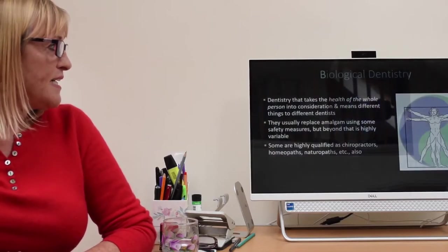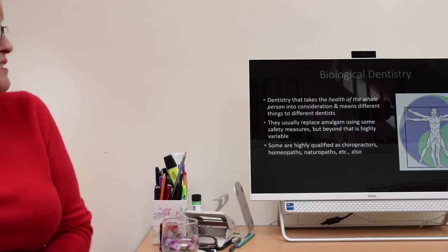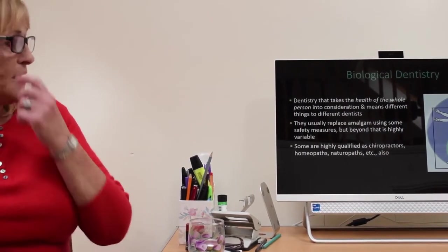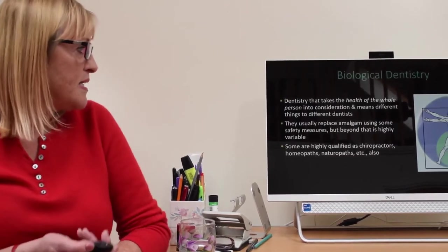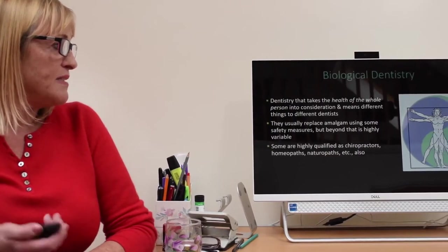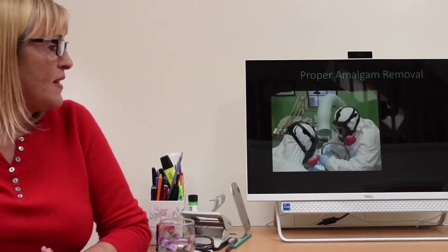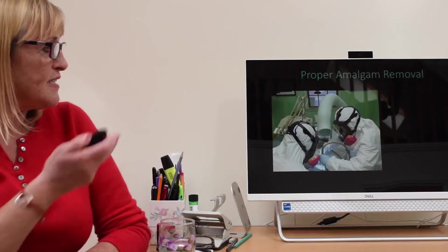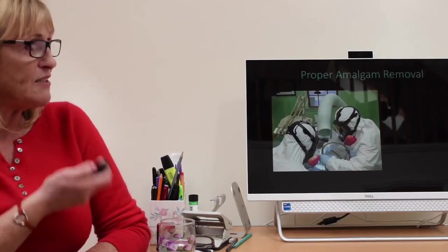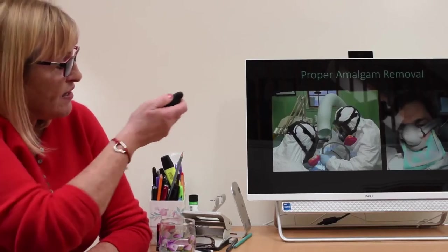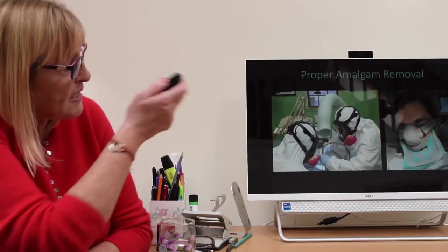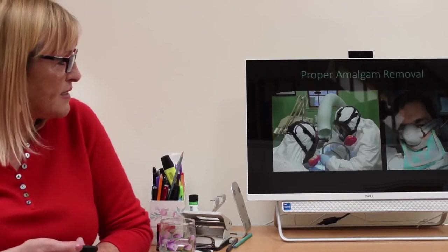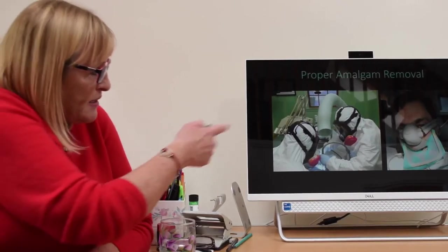Biological dentistry. It's dentistry that takes the health of the whole individual into consideration. It means different things to different dentists. They usually replace amalgam fillings using some safety measures. But beyond that it's very variable. Some are very highly qualified as chiropractors, homeopaths, naturopaths and things as well as being dentists. This is what proper amalgam removal should look like. If the dentist understands how toxic it is, he should be protecting the patient, himself and his members of staff. You should have a high volume extraction. You should have a rubber dam. The patient should be given clean air or oxygen. There's a whole load of other things to do with water cooling that they can employ. They should be wearing these proper gas masks as well.